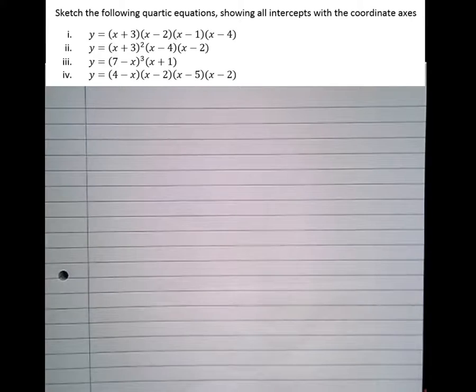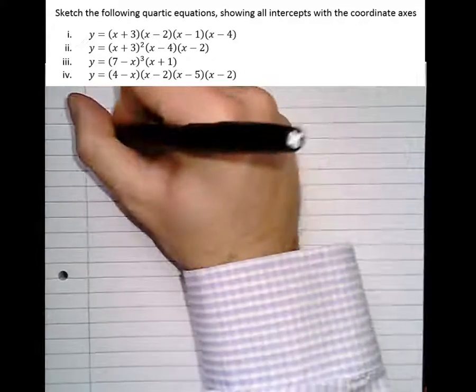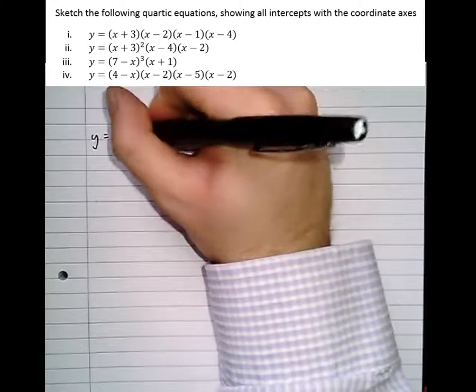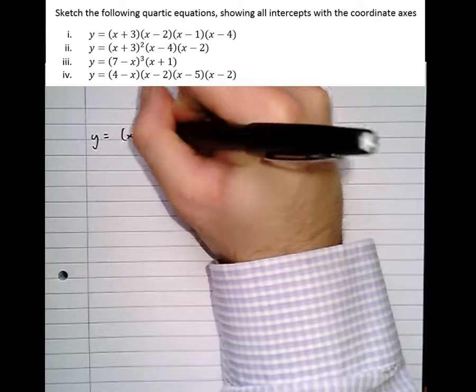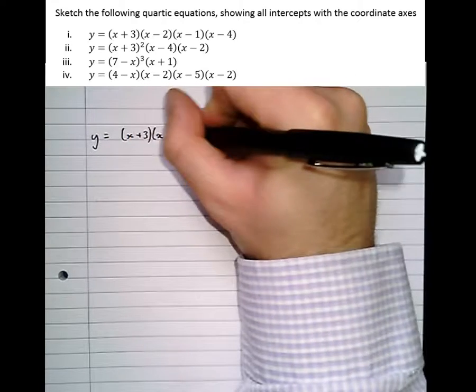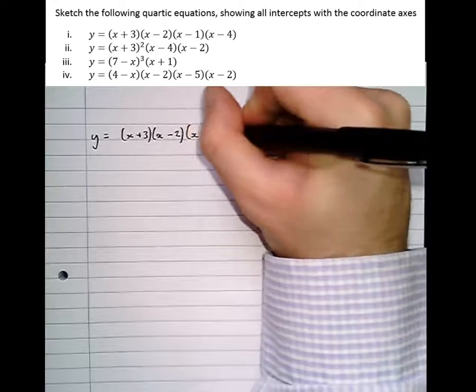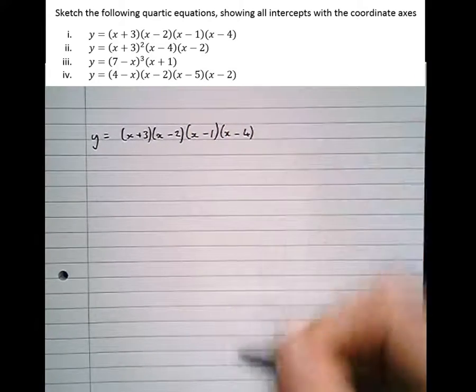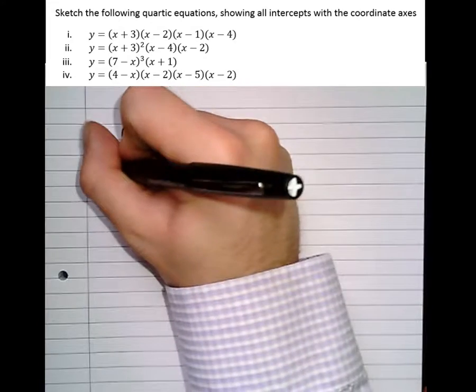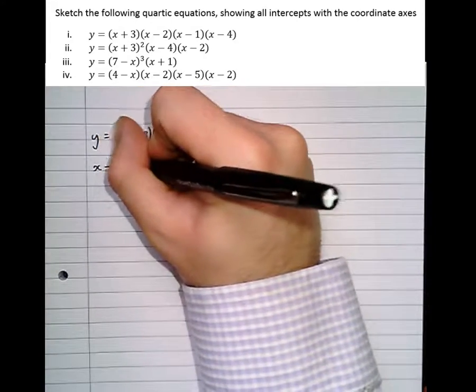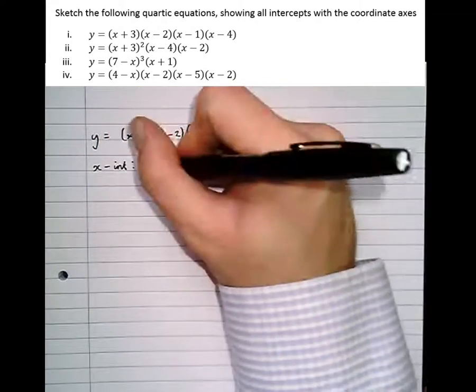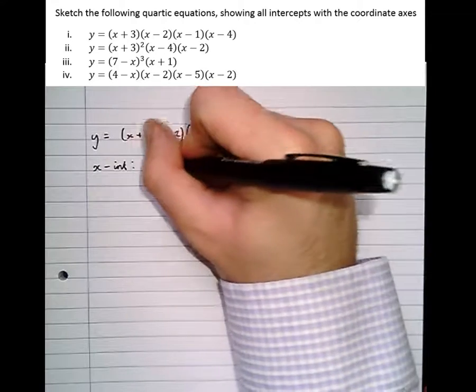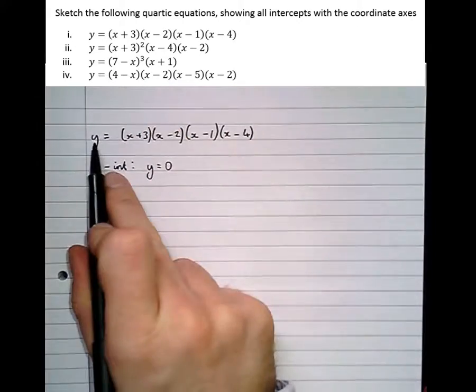So let's start. It's asking us to sketch y equals (x + 3)(x - 2)(x - 1)(x - 4). The first step is to find out what the x-intercepts are, or the roots as they're sometimes known, and they happen when y equals 0.